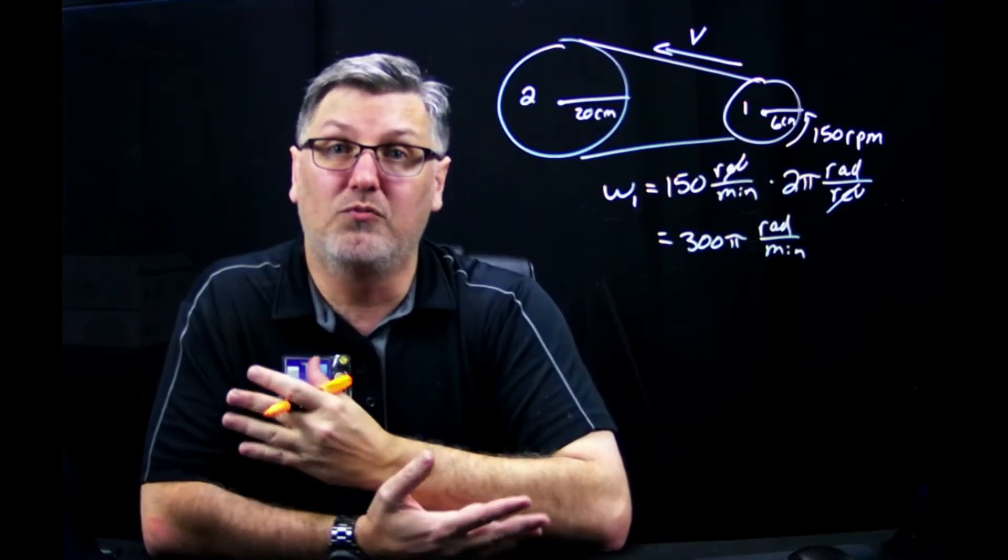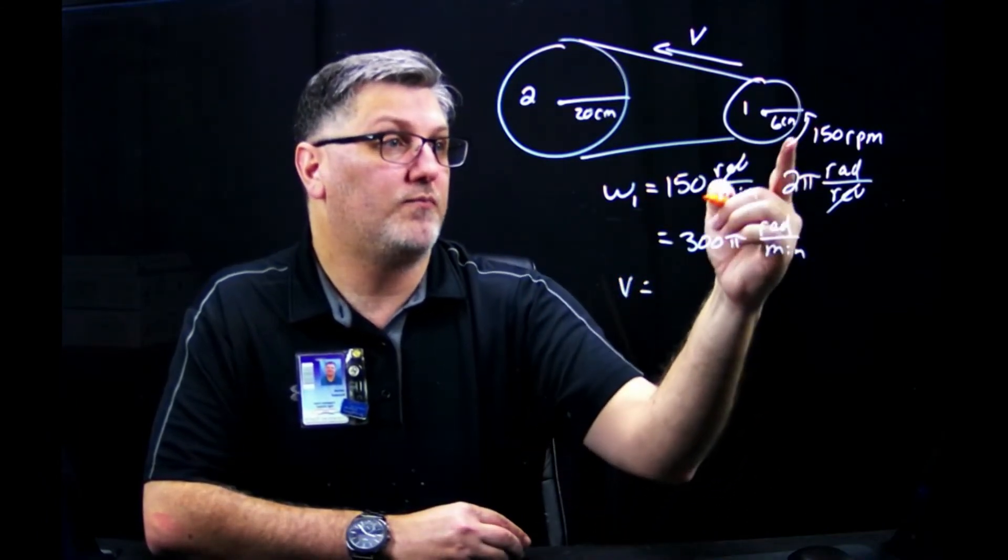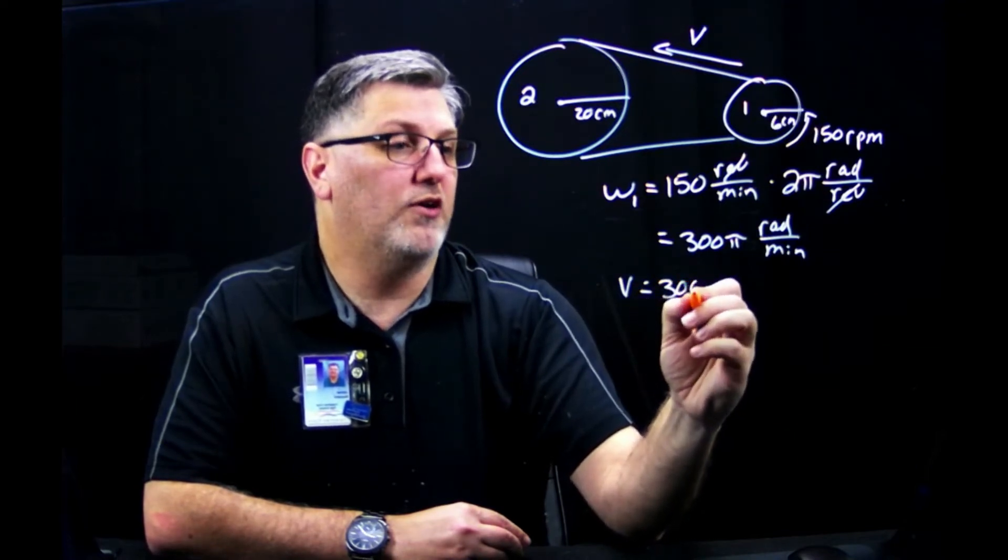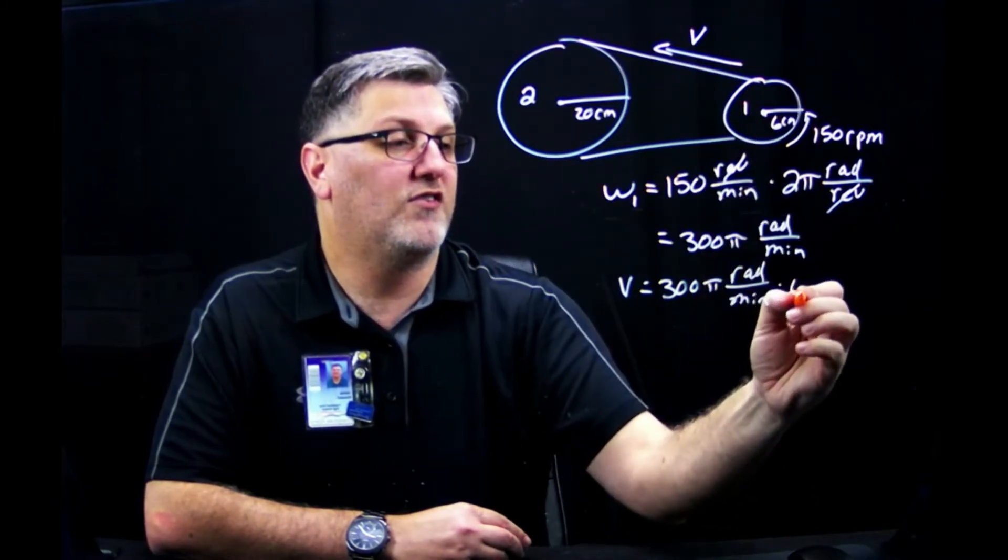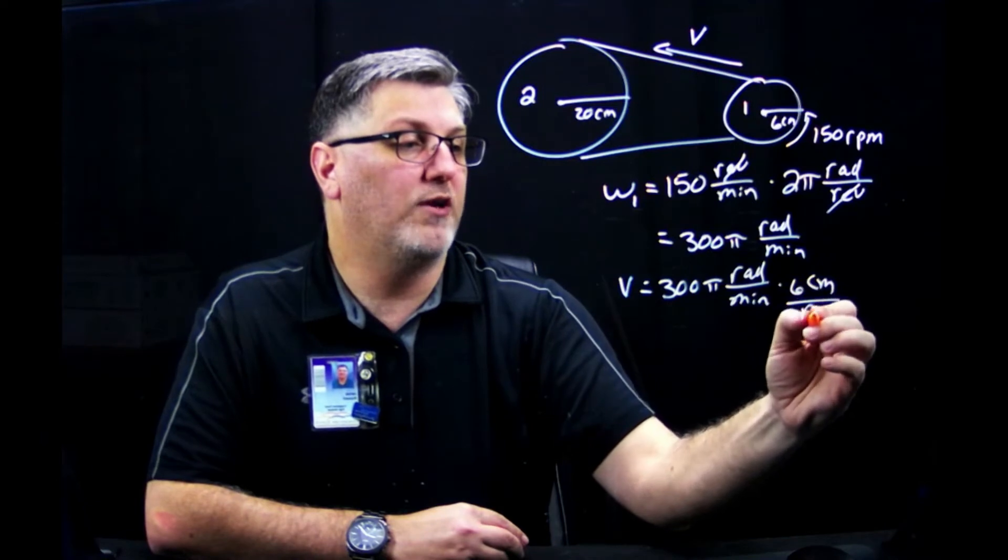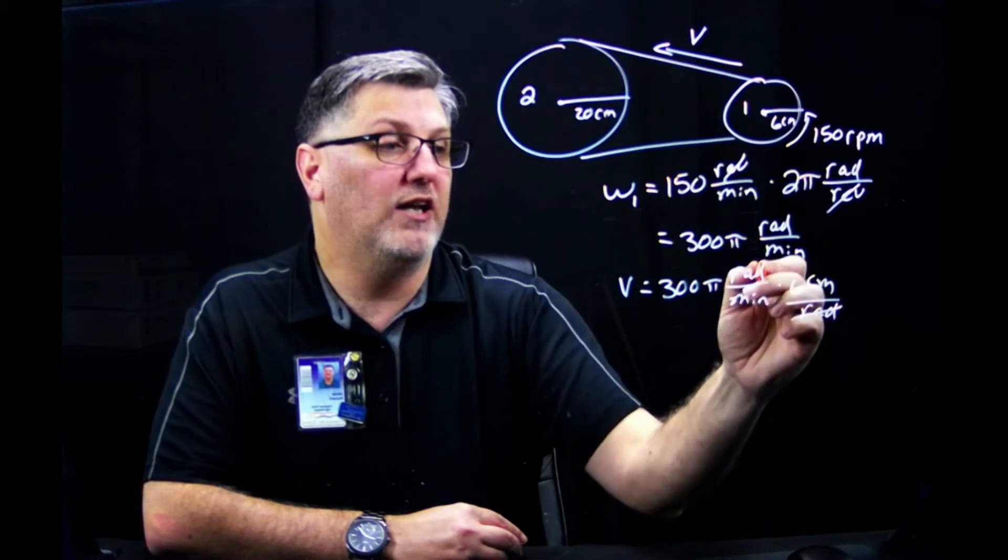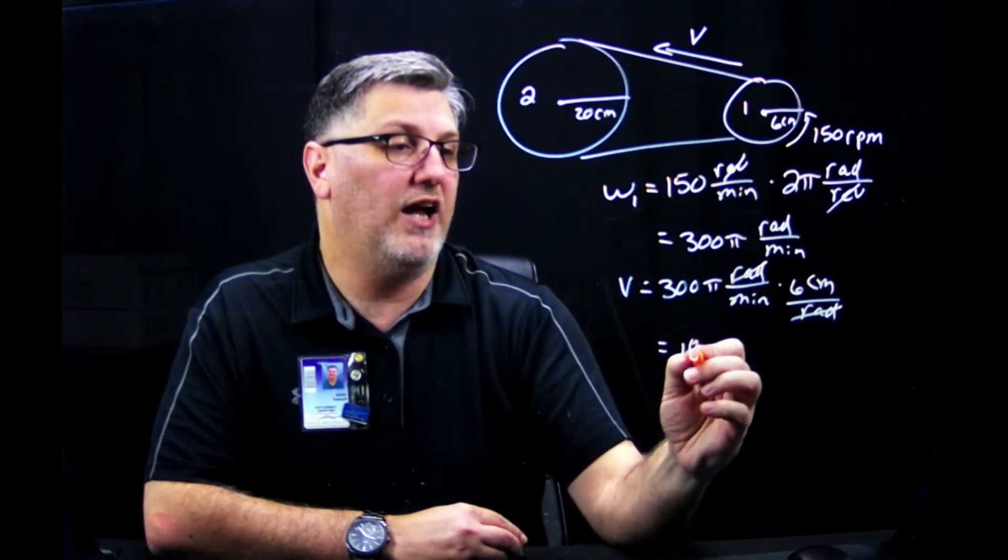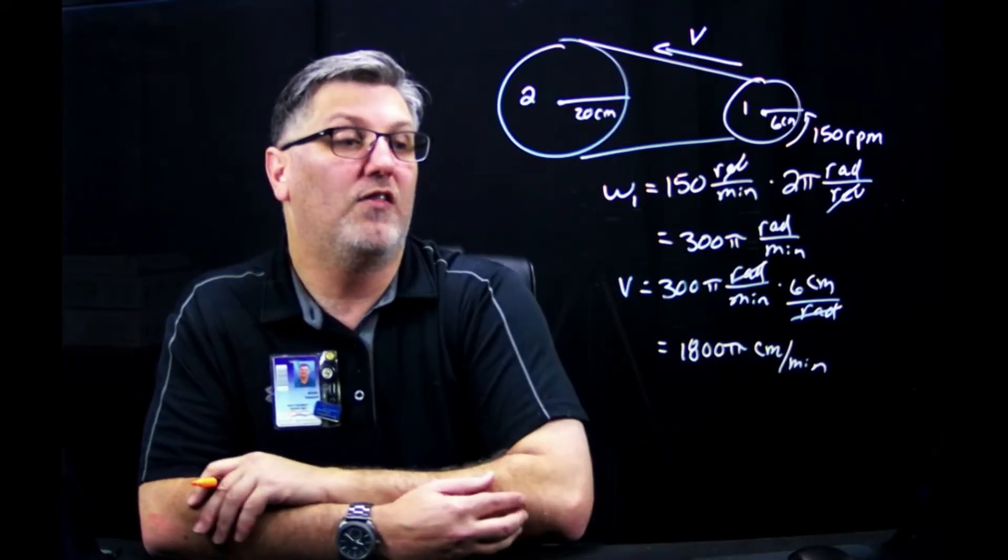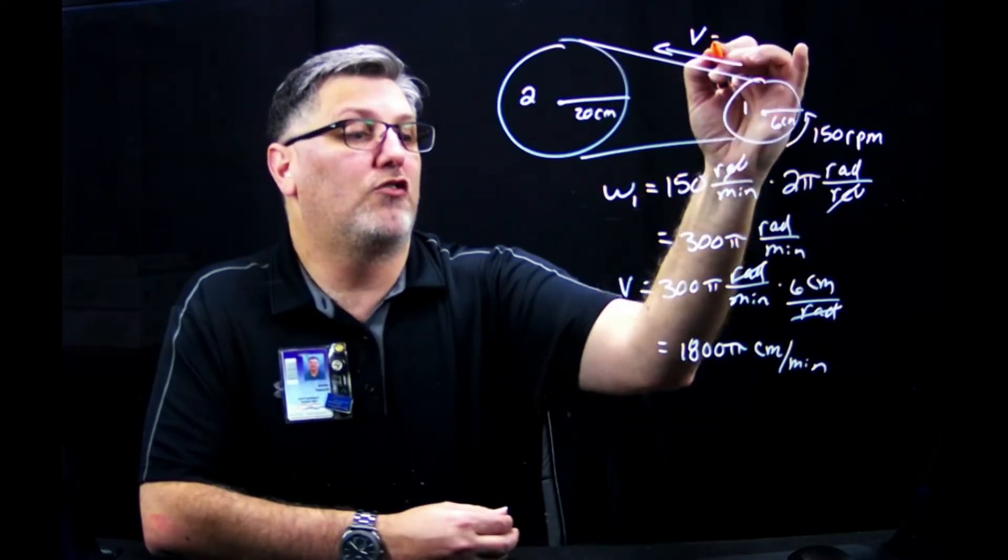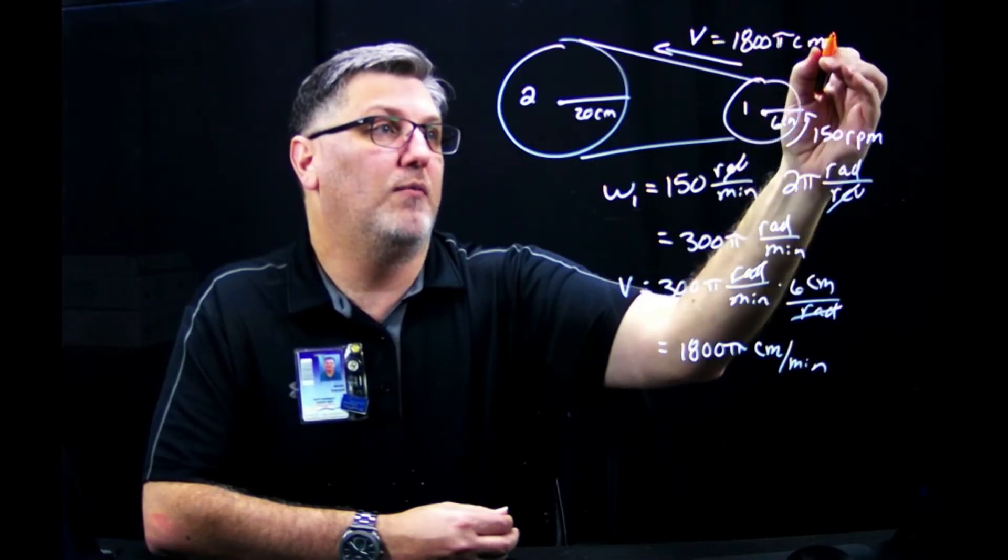Now to find a linear velocity, I just multiply it by the radius. So my velocity is going to be my 300π radians per minute times my radius, which is 6 centimeters per every radian, because one radius is one radian. My radians cancel, and this gives me 1,800π centimeters per minute. That's perfect. That is my linear speed. So my linear speed here is 1,800π centimeters per minute.